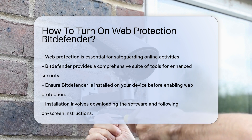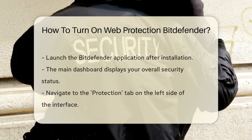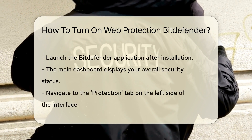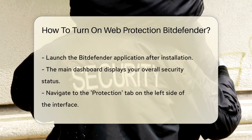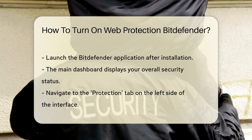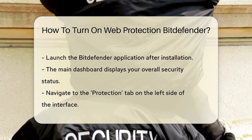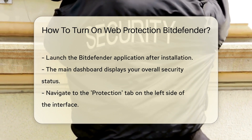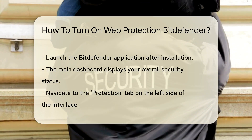Once installed, launch the Bitdefender application. The main dashboard provides an overview of your security status. Look for the Protection tab on the left side of the interface. This section houses various security features, including web protection.